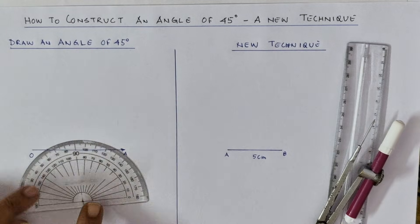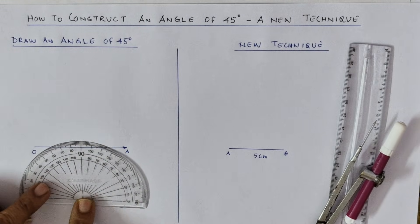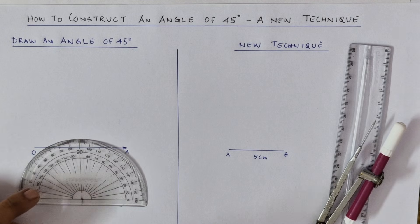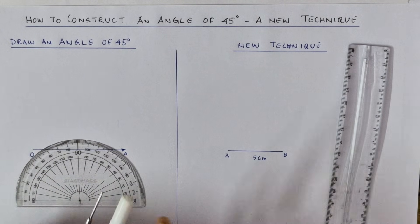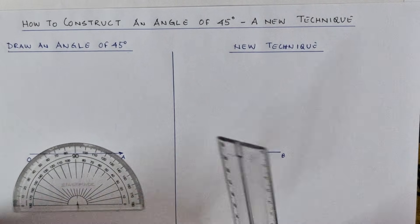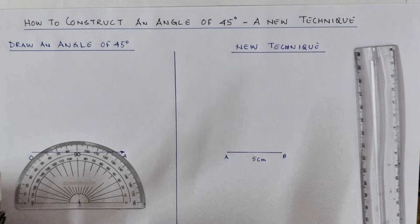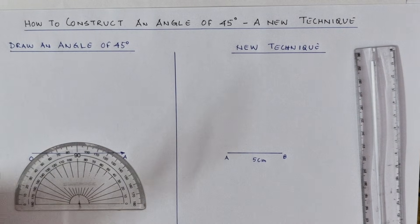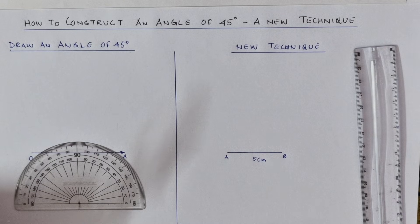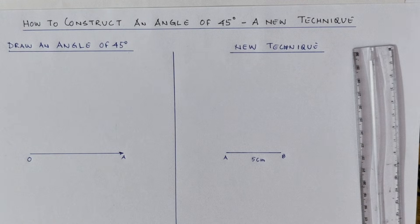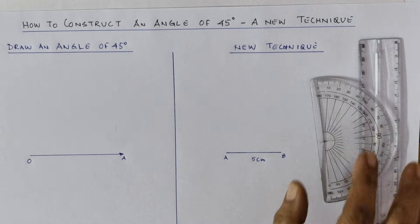Students, what do you need? You need a protractor so that you can check whether the particular angle is correct after constructing it. You also need a compass and obviously a ruler. I'm using a sketch pen instead of a pencil, but you must use a pencil — I'm using it because it gives better visibility.